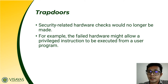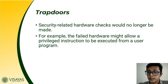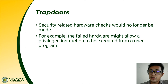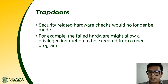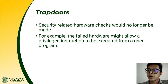For example, the failed hardware might allow a privileged instruction to be executed from a user program. So the hardware is now distracted, and what is still running is the processor. Since the processor can still run, any instructions fed to the processor can be executed. The user may suspect the system is failing because the hardware is not working, but the truth is that the processor is still working and any instructions given to it can still be executed.